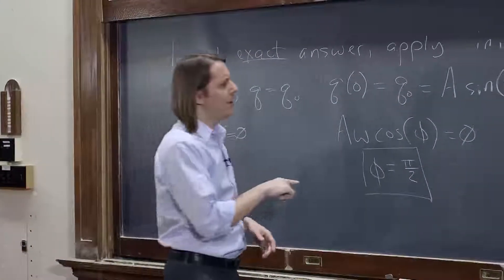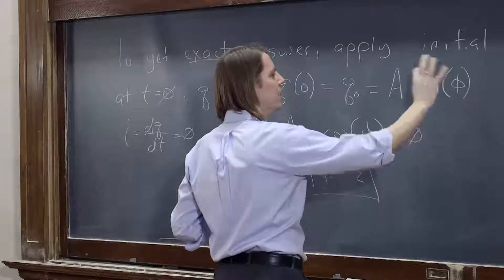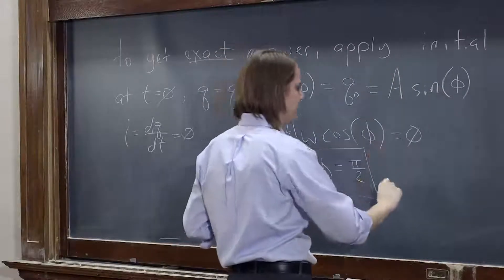And now if phi is pi over 2, then we plug that in here. Sine of pi over 2 is 1. So we realize, oh, A is just q-naught.